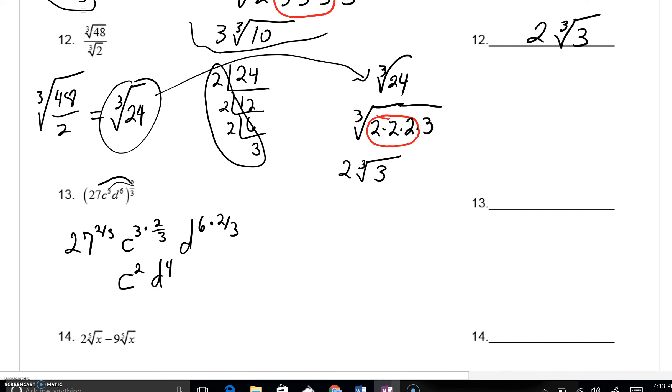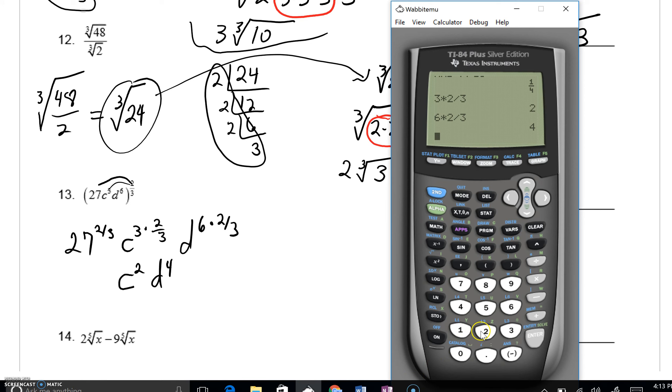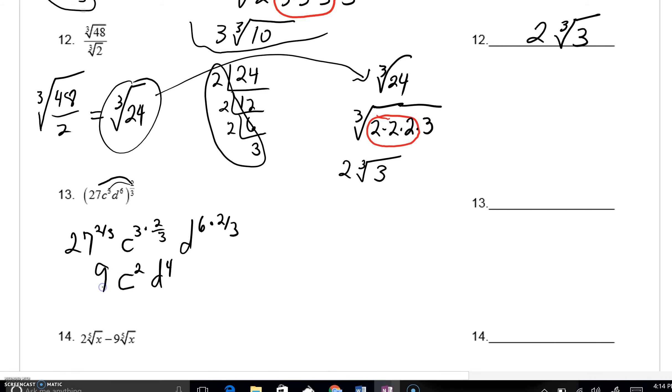Now you might notice I left off the 27 to the 2 thirds. Believe it or not, you can do that with the calculator as well. 27, raise it all up to the 2 divided by 3 power. What do you get? Real quickly, you get a 9. So without too much work, you'd get 9 C squared D to the 4th.